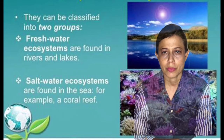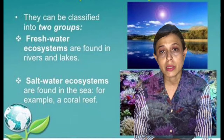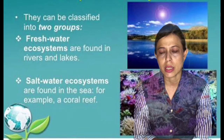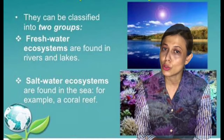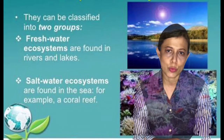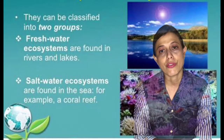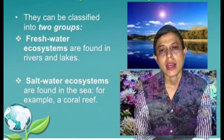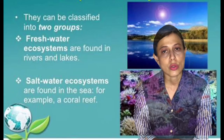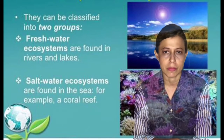The aquatic ecosystem is the ecosystem that happens in the water. The aquatic ecosystem is divided into two big groups: the first one is the freshwater ecosystem, and the second is the ocean ecosystem, also called the marine ecosystem.